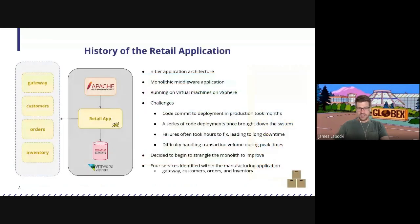There's been a group of folks knocking on my door, emailing me from the Conveyor community that wanted to hear about the history of our retail application and where we are today. So I'm excited to invite them into the meeting and tell them the history of this and see what they can do to help me modernize this application. This retail application is a typical N-tier application. It started in the mid-2000s. It's a monolith. It runs on VMs today on VMware vSphere, and we've got a number of challenges with this.